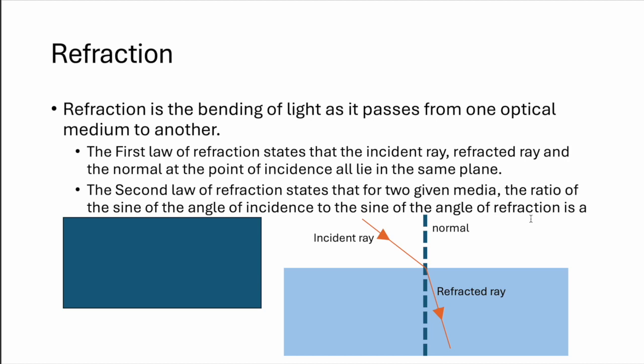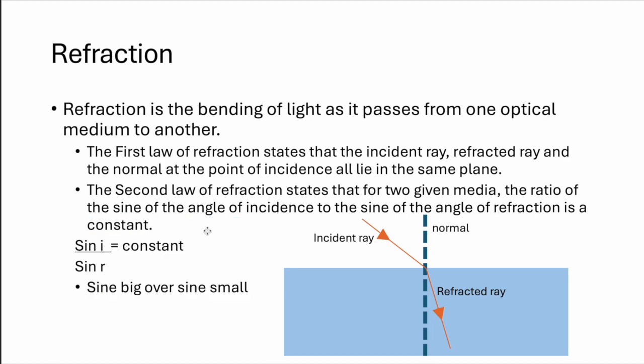And also with this image, you can already state two laws. Incident ray, refracted ray and normal, they all lie on the same plane. And the second law of refraction will be the formula of sine i over sine r will give you a constant. Sine i meaning the incident ray and sine r giving you the refracted ray will give you a certain number and that number is used to calculate refractive indexes for the particular medium.